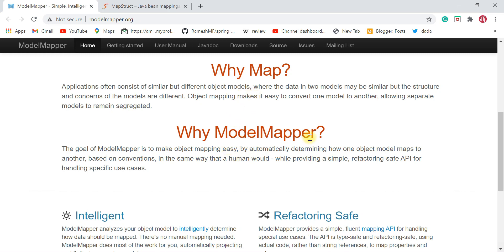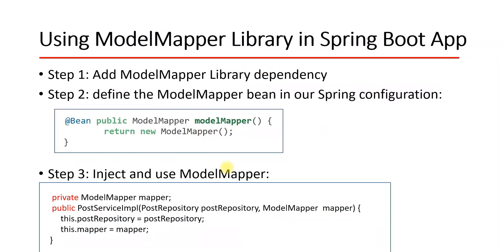We are going to stick with the ModelMapper library. I'll show you how to configure and use it in our Spring Boot application. I've made this simple by providing step-by-step instructions. Step one: add the ModelMapper library as a dependency in the pom.xml. Step two: define a ModelMapper class as a bean in our Spring configuration. Step three: inject this ModelMapper Spring bean in our service classes and use its API to map one object into another.